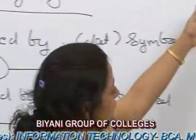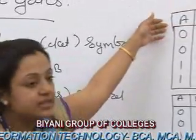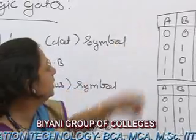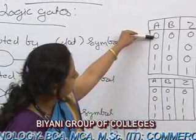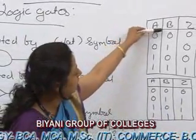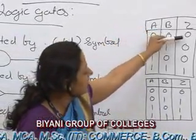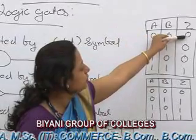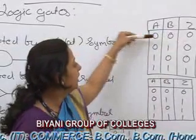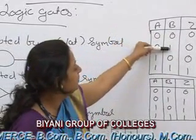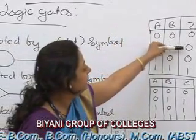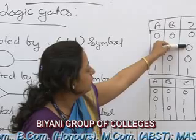Here we can see the truth table. If we enter A=0, B=0, then we get the output Z=0. If we enter A=0, B=1, then we get the output 0.